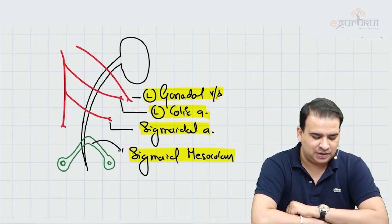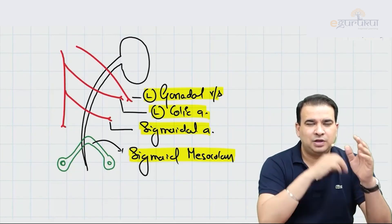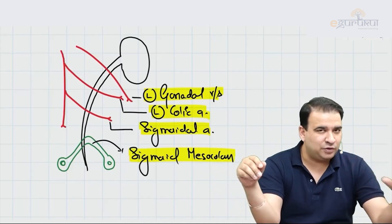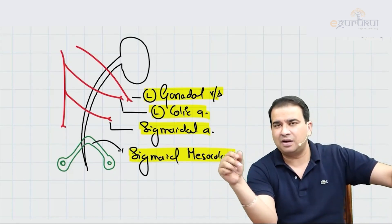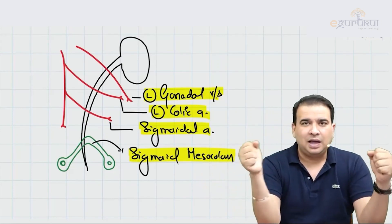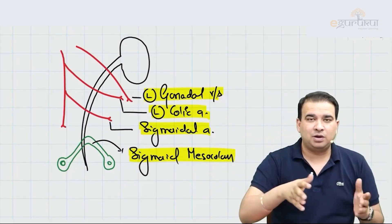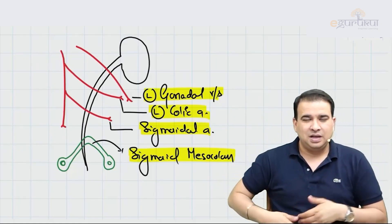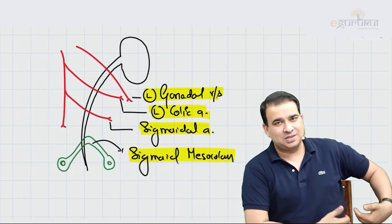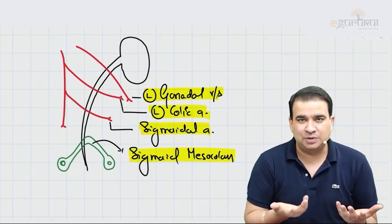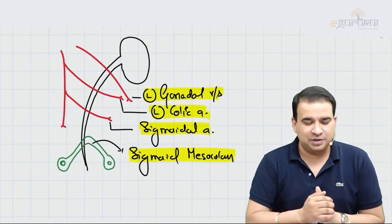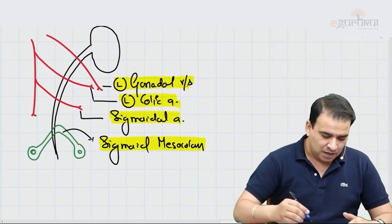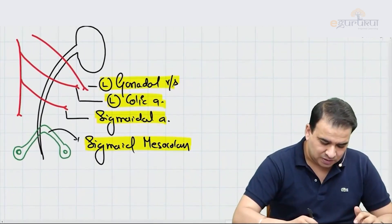The sigmoid mesocolon is also seen in the anterior relation of the left ureter — we discussed that the left ureter is present in the intersigmoid recess. So: when thinking of the right ureter, think of branches of the superior mesenteric artery; for the left ureter, think of branches of the inferior mesenteric artery. The root of mesentery forms the anterior relation of the right ureter, and the sigmoid mesocolon forms the anterior relation of the left ureter.